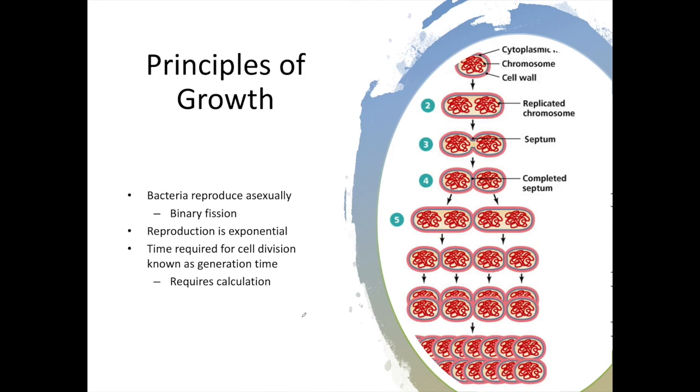The time that is required for a cell to divide is known as a generation time. Each time these cells divide, they create a new generation. When we use the term bacterial growth, we are not talking about the size of a cell. We are actually talking about the population of cells in a single environment. So when you hear growth of bacteria, don't think size of cell, think number of cells increasing in population.